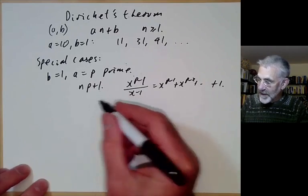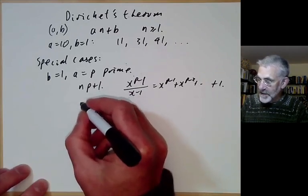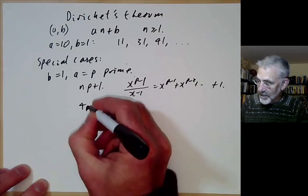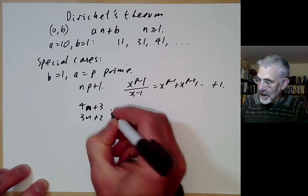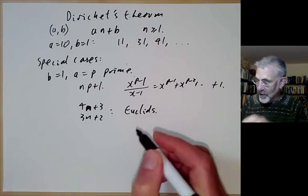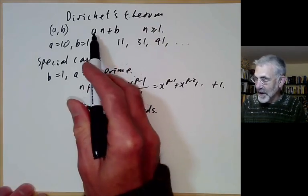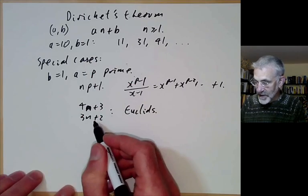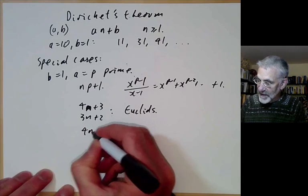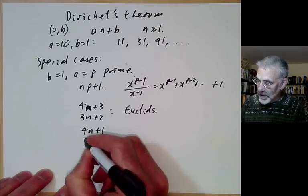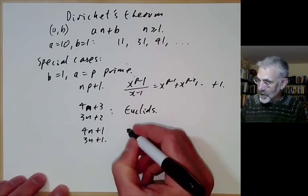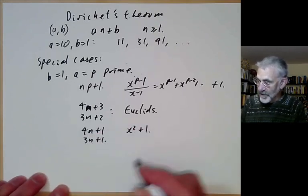We also did various other cases that were quite easy. For instance, 4n plus 3 and 3n plus 2 followed by an easy variation of Euclid's proof that there are infinitely many primes. The case a equals 1 is also easy by Euclid's proof. We gave some other proofs for progressions like 4n plus 1 or 3n plus 1 by using other polynomials — for 4n plus 1 we consider the polynomial x squared plus 1.